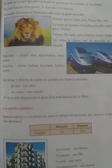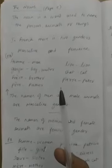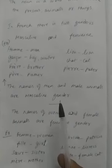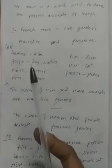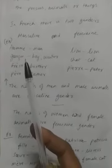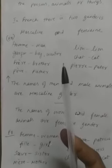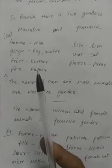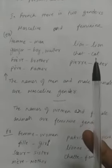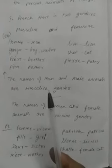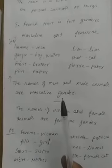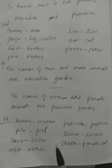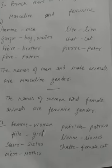Now let us see what I have written in the notes. A noun is a word used to name persons, animals, or things. In French, there are two genders — masculine and feminine. Examples of masculine: 'homme', 'garçon', 'frère', 'père', 'lion', 'chat'. Names of men and male animals are masculine gender.